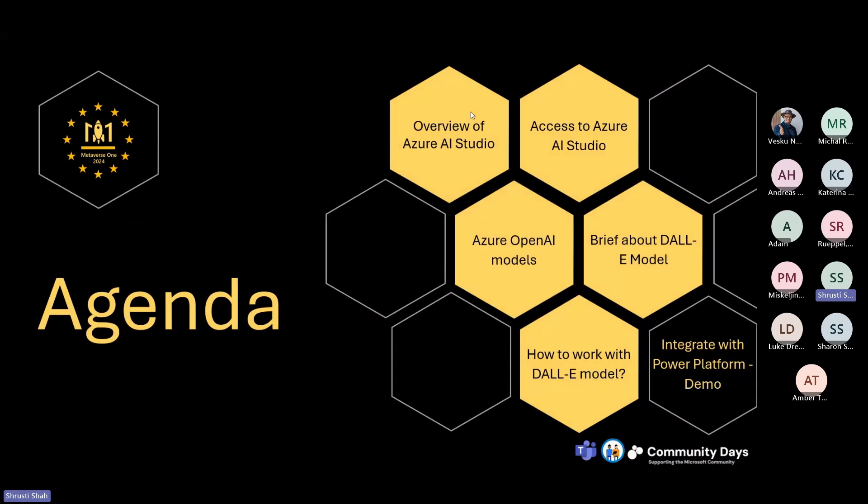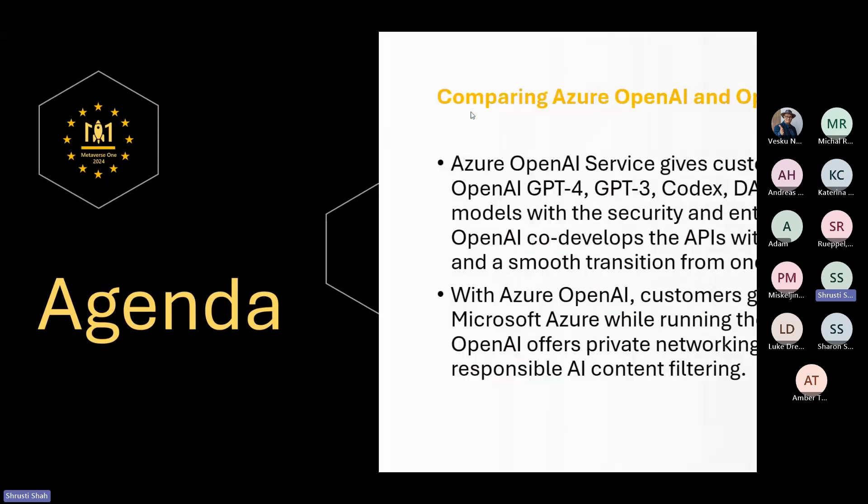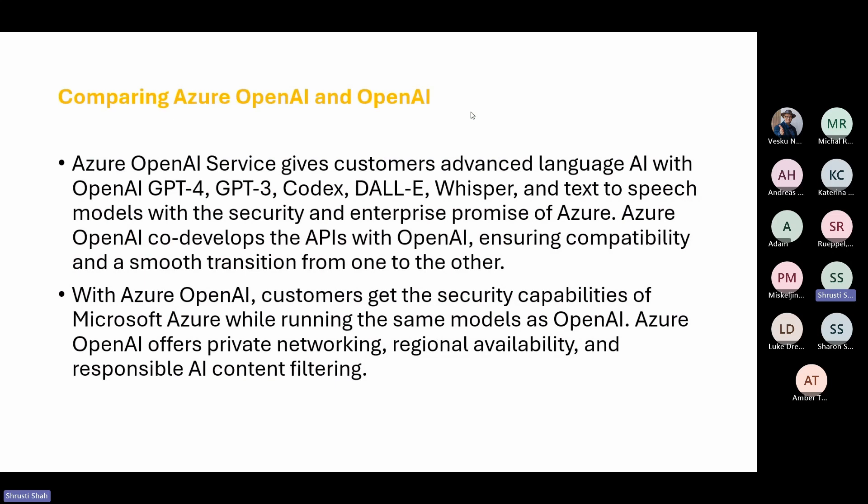Let's dive into the agenda. I will not straight away walk you through the Power Platform Custom Connector, because before we understand DALL-E, we need to understand where exactly DALL-E comes into the picture. Like, what exactly is Azure OpenAI? Are you already able to access Azure OpenAI, or if not, how can you go ahead and access it? And if you are already able to access it, how can you start playing with the models — either GPT variants like 3.5 or 4, or DALL-E, or assistants, Whisper, etc. This will be a crisp and concise conversation.